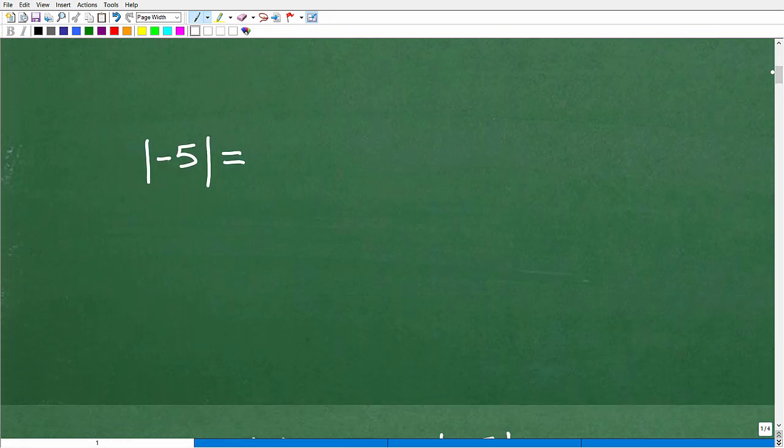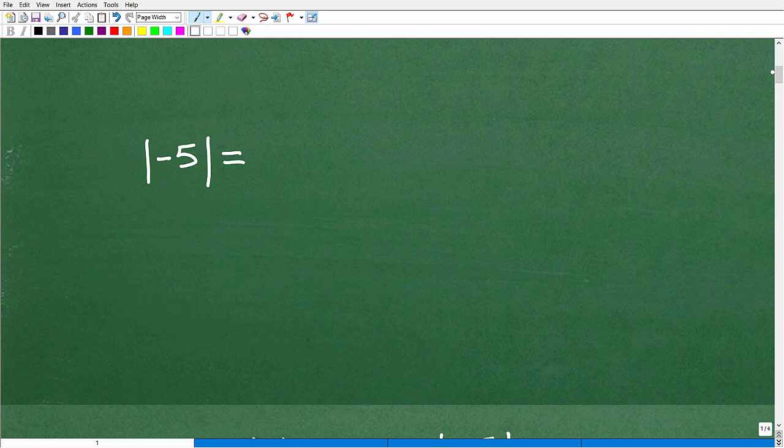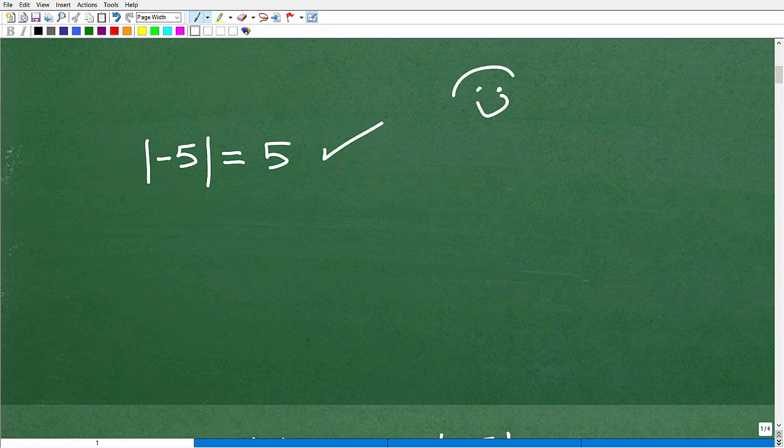So I have the absolute value of negative five. So what is the answer? And hopefully most of you out there said it's positive five. And if that's the case, give yourself a check mark and a happy face and a little A plus. That's better. And that is correct.